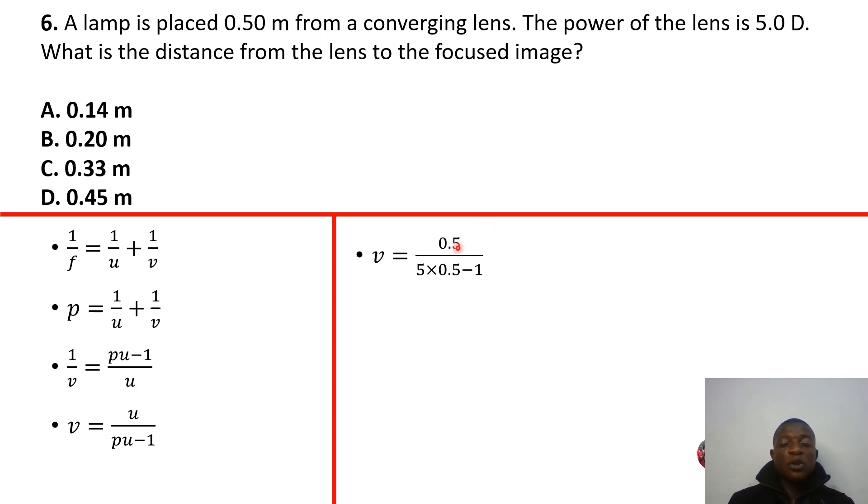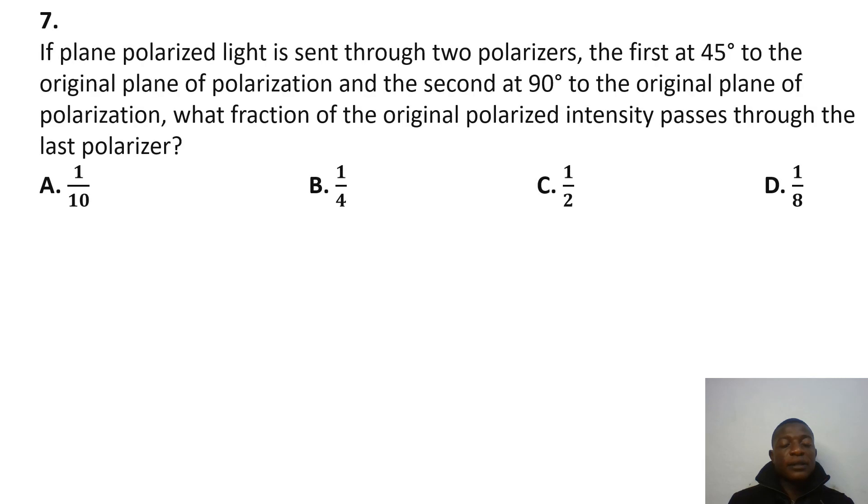And then we simplify. You get v as that. And so you substitute the values of u and p. You realize that our u there is just the object distance, which is 0.5. And then 5 there is the power of the lens. And then 0.5 is the object distance. And then minus 1. And then you actually get 0.33 meters, which is the image distance. So our answer there is C.